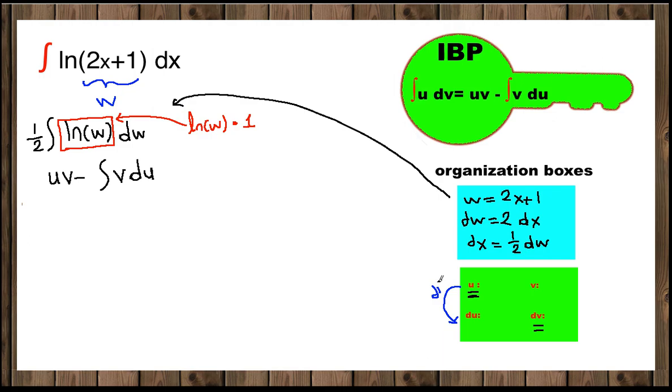So which one will be our u and which one will be our dv? Whichever is differentiable easily will be your u, and whichever is integrable easily will be your dv. Integrable means the antiderivative is easy to find.